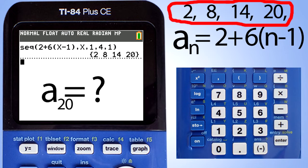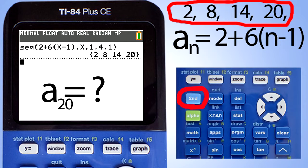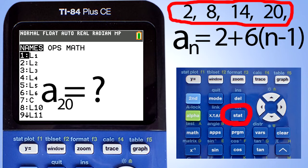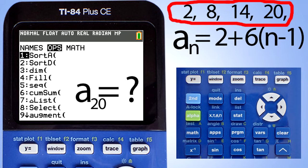Now let's go back and find the 20th term, or a sub 20, in our sequence. We will go back to the sequence equation by pressing the second button here and the stat button here. Go to ops, go to 5, sequence.